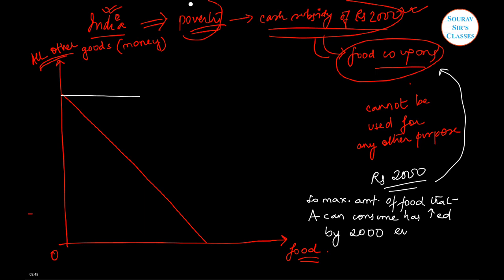2000 is the amount of cash subsidy which has to be utilized only on food, so we will have a budget line like this. This point on the horizontal axis accounts for food equal to 2000.